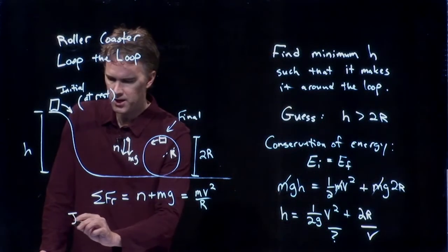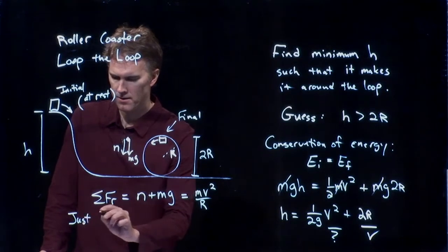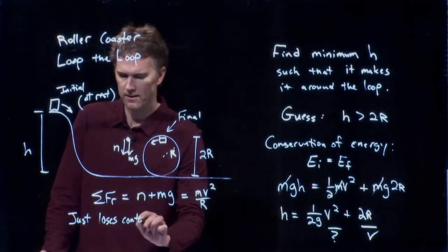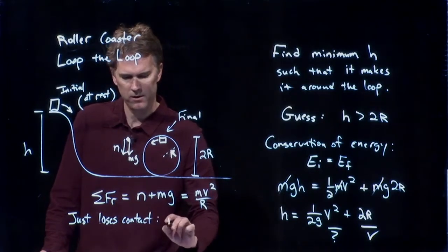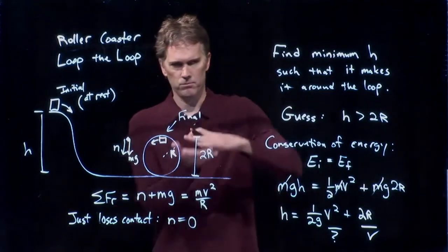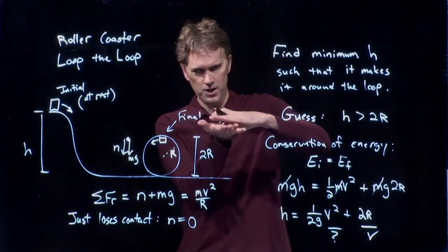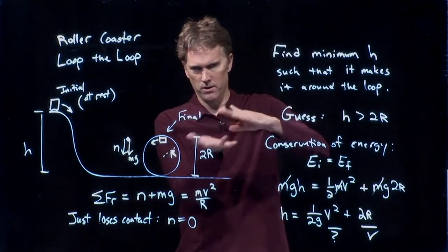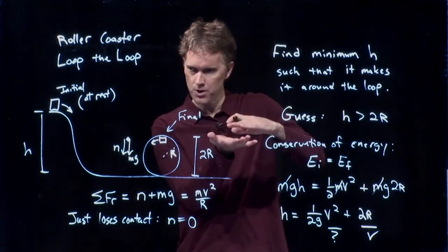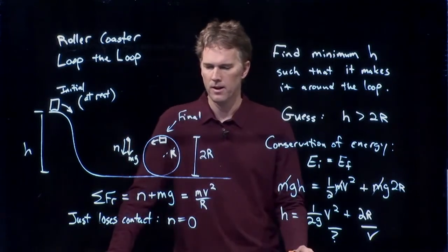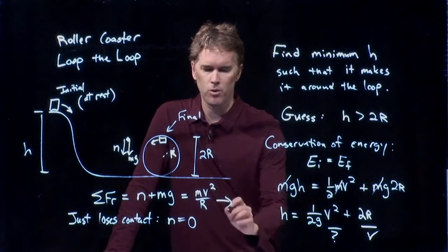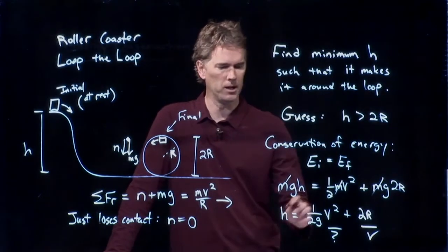Now Connor, if it is just making it, that means it is just about to lose contact with the track. What's the normal force equal to? Zero. Correct. Anytime two surfaces are just losing contact with each other, there can be no normal force anymore, right? If it's not actually on the track, there's no normal force pushing on it. And so look what happens. We get a nice little expression now for v, and we can plug it into this equation.